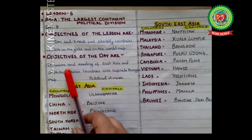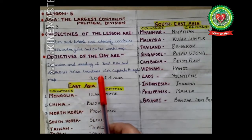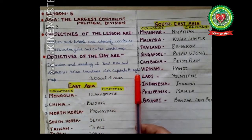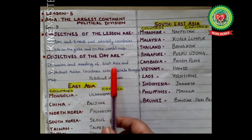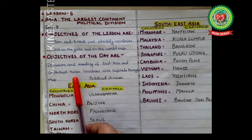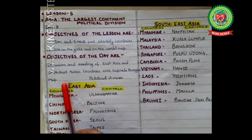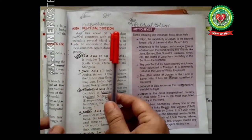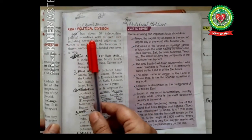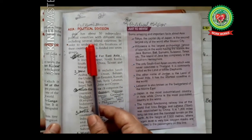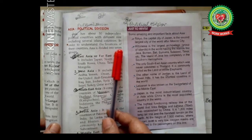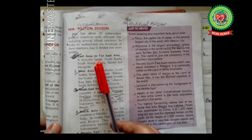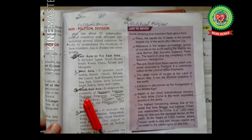The objectives of the day are discussion and reading of East Asia and Southeast Asian countries with capitals through map. Today we are going to focus on East Asia and Southeast Asian countries with capitals through map. Take out your book and open page number 59. Asia has about 50 independent political countries of different sizes, including several island countries. In order to understand the locations of these countries, Asia is divided into seven groups.